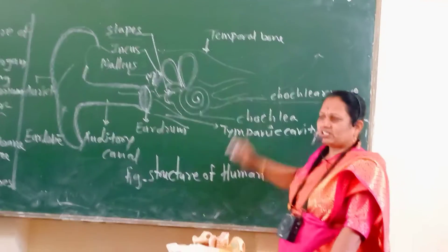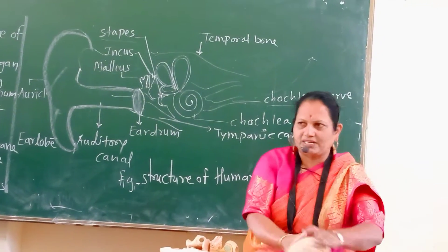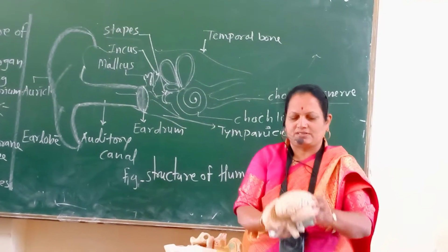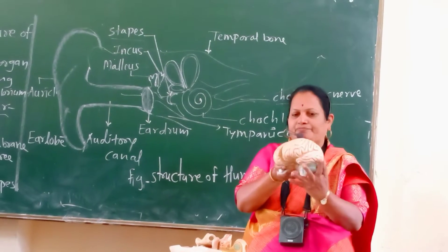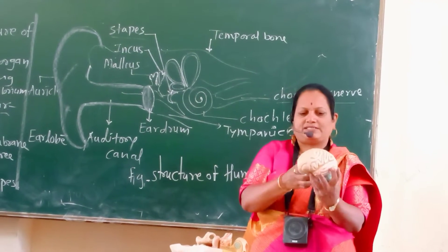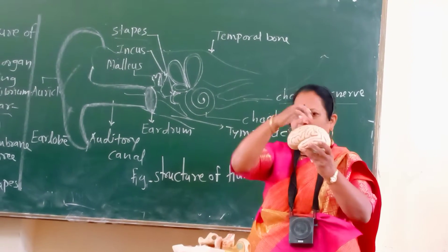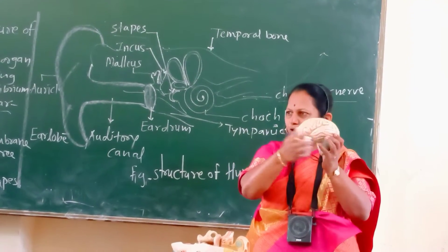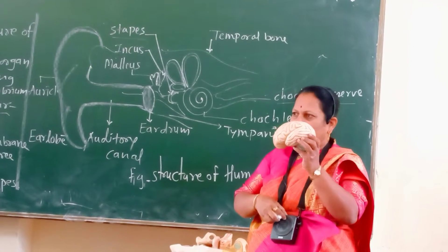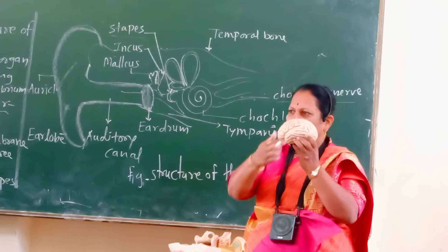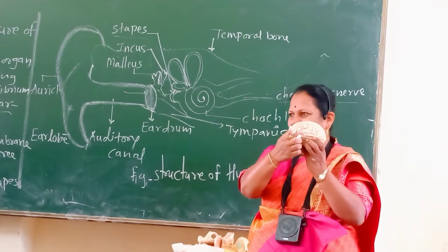Which region of the brain? Vibrations are processed in the temporal part of the brain. The brain has four regions: frontal, parietal, temporal, and occipital. In the temporal region, there is the sense of sound.